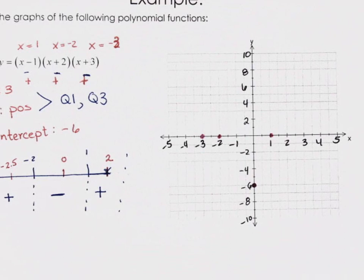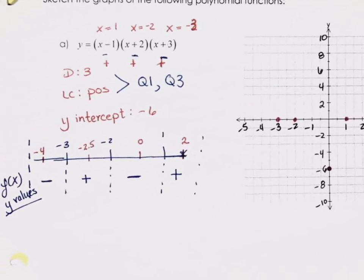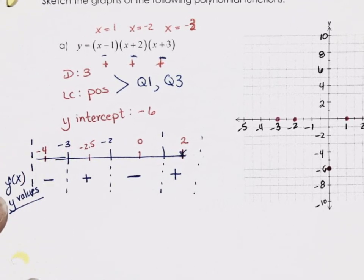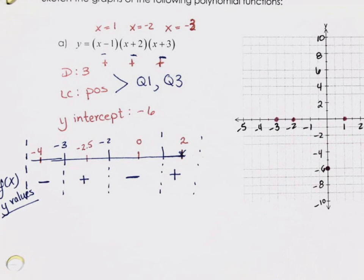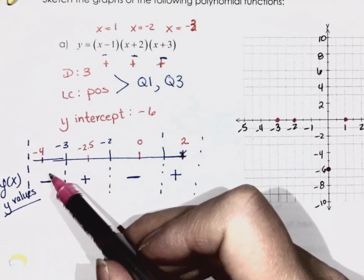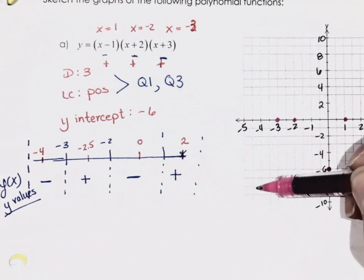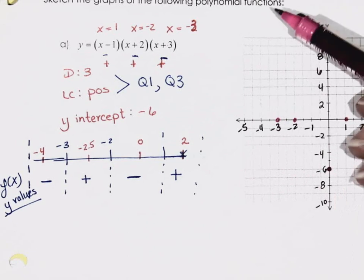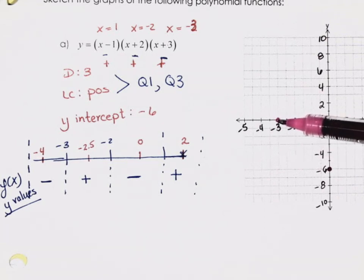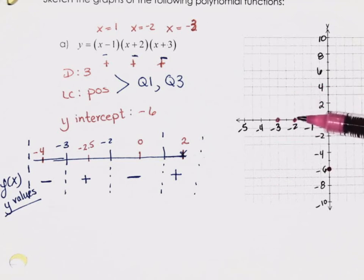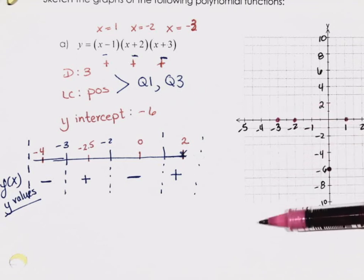Now figure out where it goes through. Anything less than negative 3 has negative y-values. Starting from the left side, I'm going negative, reach negative 3 at zero, then between negative 3 and negative 2 I'm positive — coming up. How far up? That's a question for calculus, not pre-calc. So just come up as far as you emotionally feel you need to.